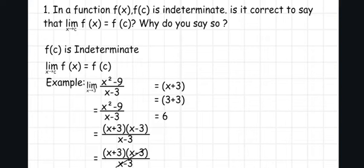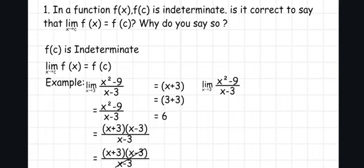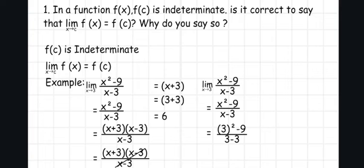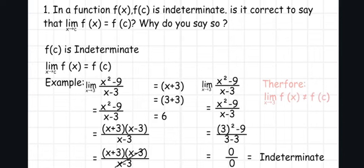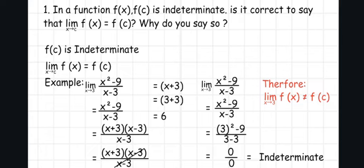For f(c), we substitute 3 directly. The equation becomes 3² minus 9 over 3 minus 3. Since 3 squared is 9, we get 9 minus 9 equals 0, and 3 minus 3 equals 0. So we get 0 over 0, which is why it becomes indeterminate. Therefore, the limit of f(x) as x approaches 3 is not equal to f(c).